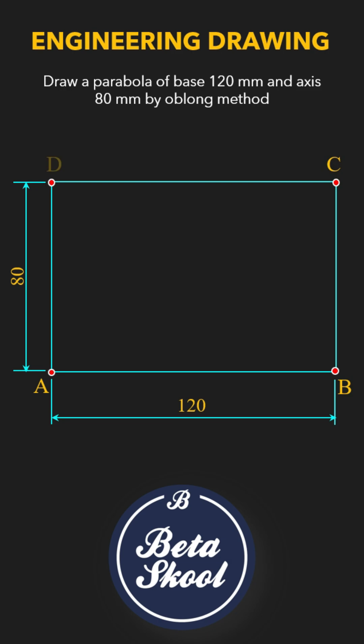Mark points E and F as the midpoints of sides AB and CD. Now join EF. This line represents the axis of the parabola.